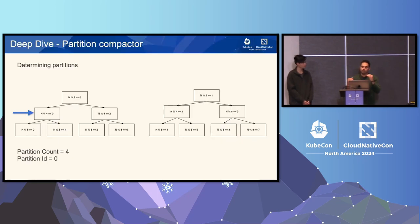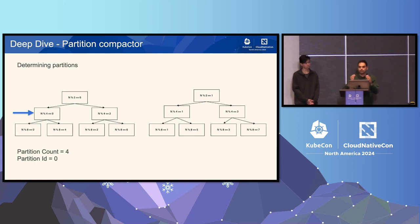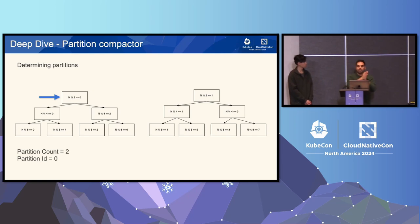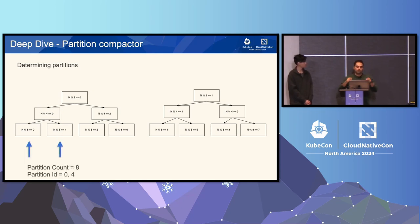The crux of the partition compactor is: how do you know where to put a block, or how blocks go together? One key requirement is that the partition count of a partition group must be a power of two. That allows us to know where a block came from and where it needs to go. For example, if you have a partition count of four and one block is from partition ID zero, and you want to decrease partitions, you know this block maps to partition ID zero of partition count two. If you want to increase to partition count eight, you know to split it across partition ID zero and partition ID four.